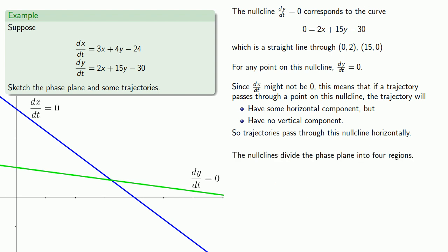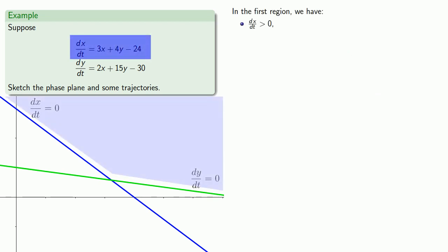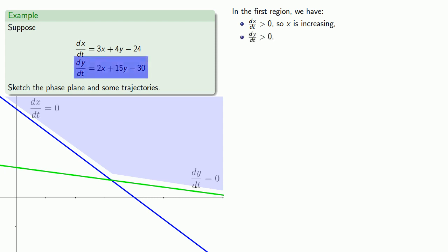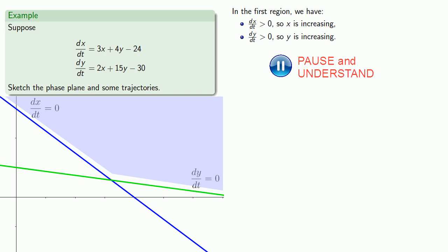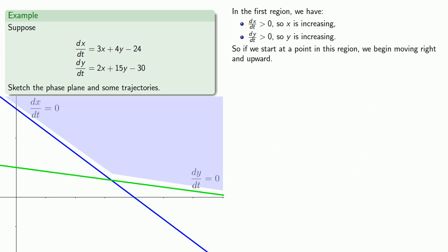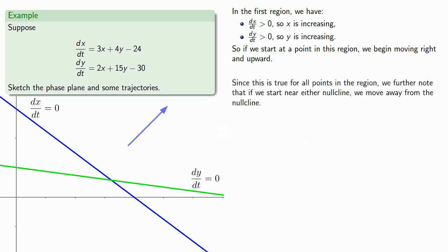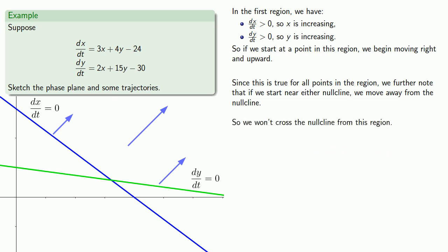Note that the null clines divide the phase plane into four regions. We'll consider what happens in each of the four regions. In the first region, dx/dt is greater than zero, so x is increasing, and dy/dt is also greater than zero, so y is increasing. If we start at a point in this region, we begin moving right and upward. Since this is true for all points in the region, if we start near either null cline, we move away from the null cline and won't cross it from this region.